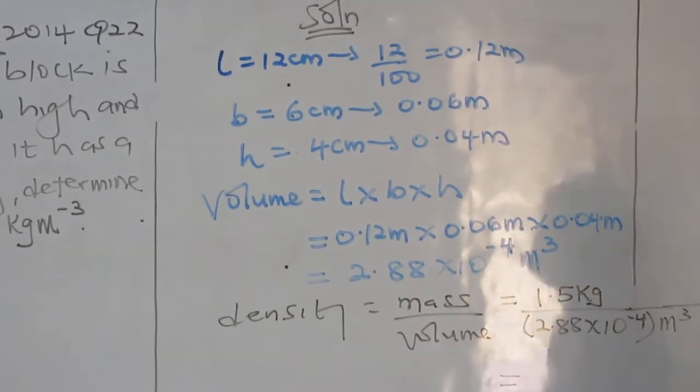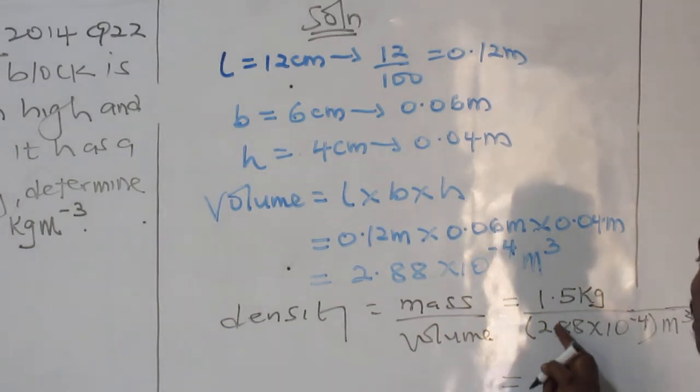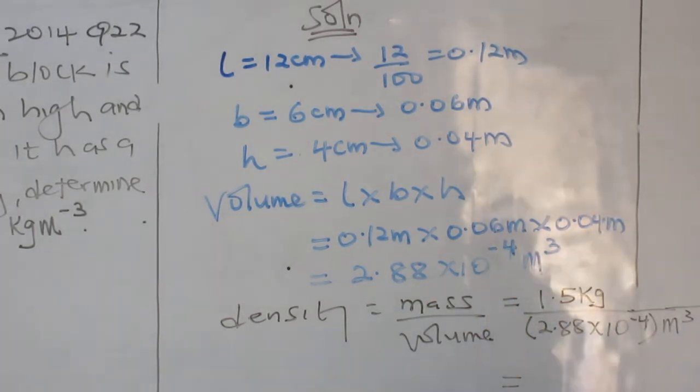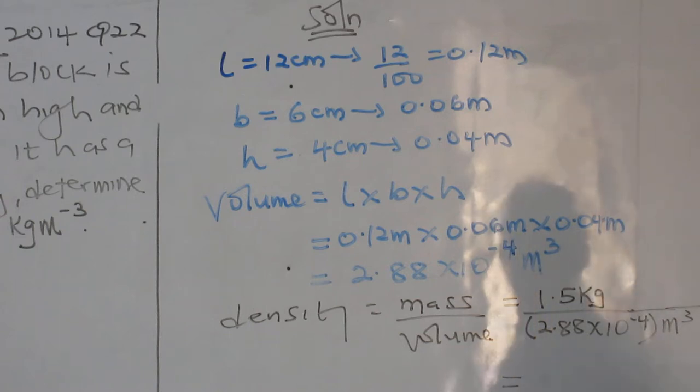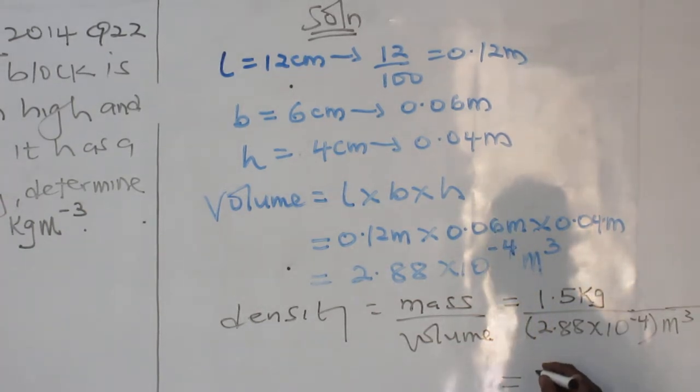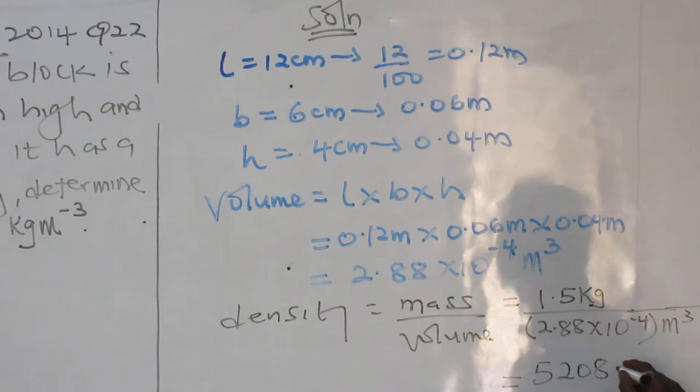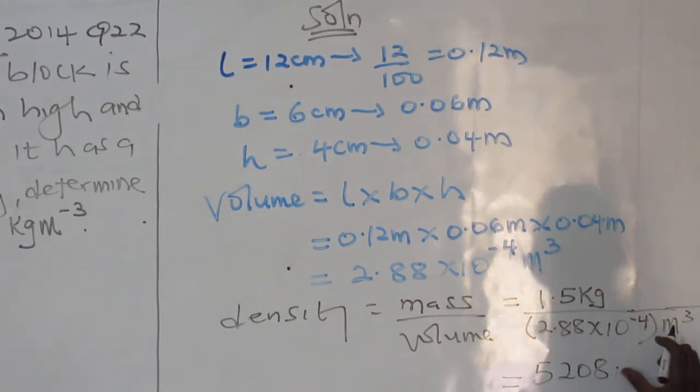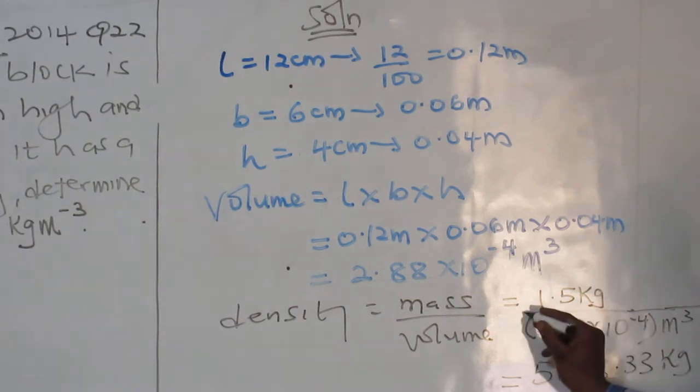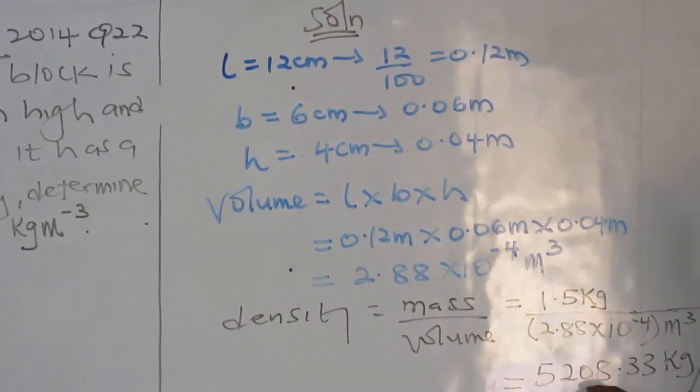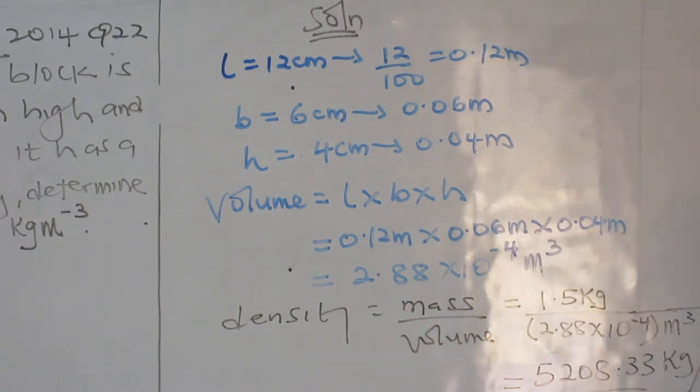Now what would my answer be? 1.5 divided by 2.88 times 10 to the power minus 4. Please compute that. Okay. So that is 5208 point 3 recurring. Now there is kilograms, there is a partition sign, there is meter cubed. I've really worked and left my answer as required. So that is it.